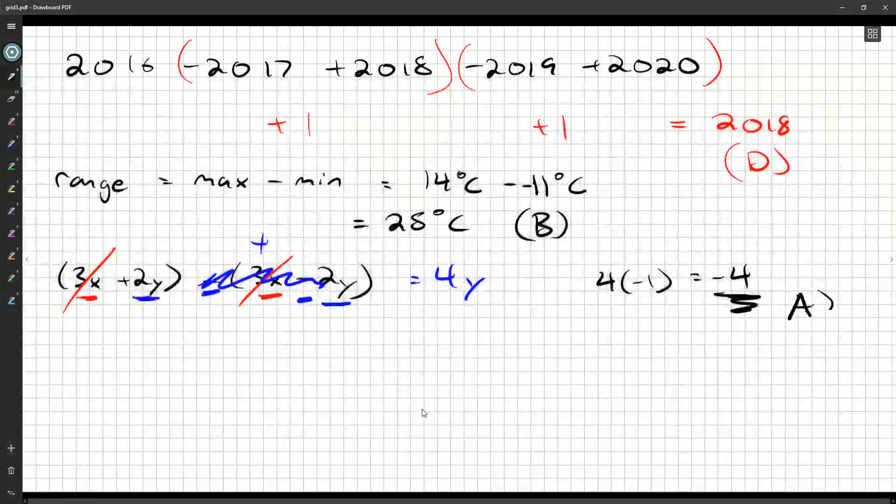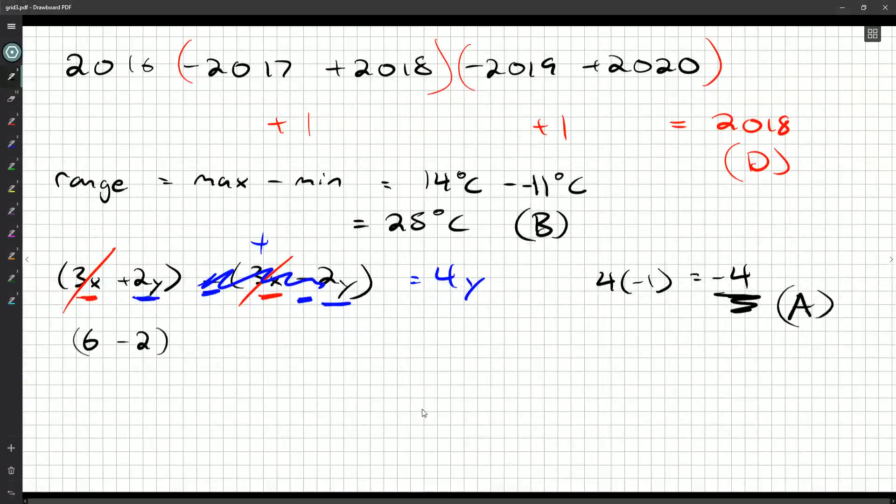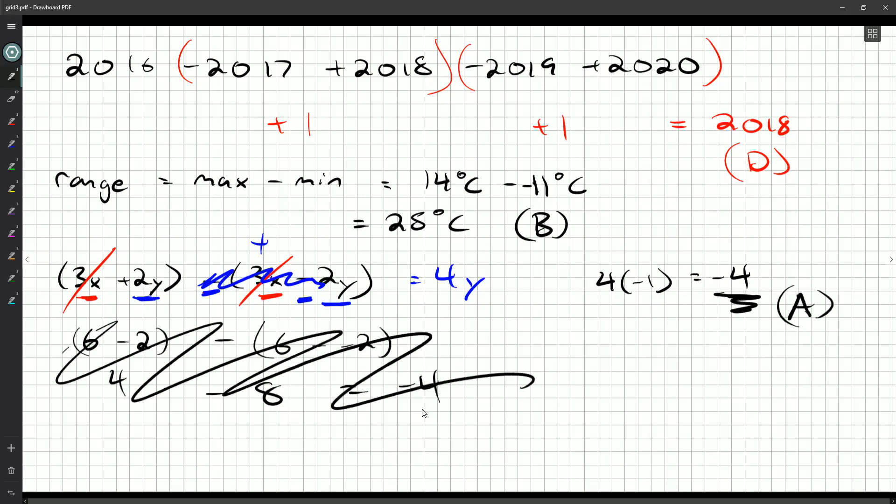So A is our answer. And we have avoided having to do things like 6 minus 2, 4 minus 6 minus negative 2, 8 minus 4. You don't have to do any of that if you just stop and simplify before subbing in.